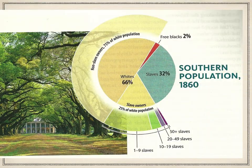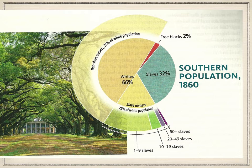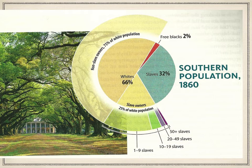Looking at the southern population in 1860: 66% was white, 32% was enslaved African Americans. But only 25% of the southern population actually owned slaves — those were the wealthier plantation owners — while the vast majority of southern whites were poor and did not own slaves. The vast majority of slave owners had only one to nine slaves; it was the wealthiest who had 50 or more. Slavery kept the rich rich and was a very profitable industry.